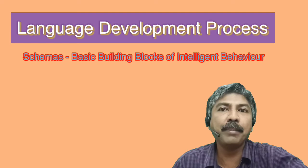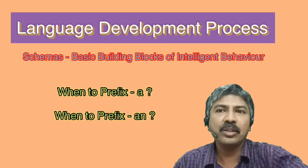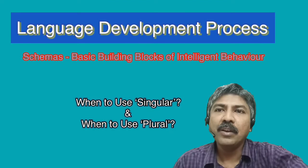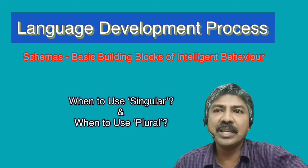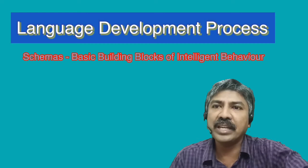For example, a person might have a schema about when to use the prefix 'a' and when to use 'an' in English. Another example is knowing when to use singular or plural. One can say these language schemas are learned as the child is exposed to grammar and get constantly modified. The child learns and updates language schemas as new knowledge and awareness of the child gets widened.